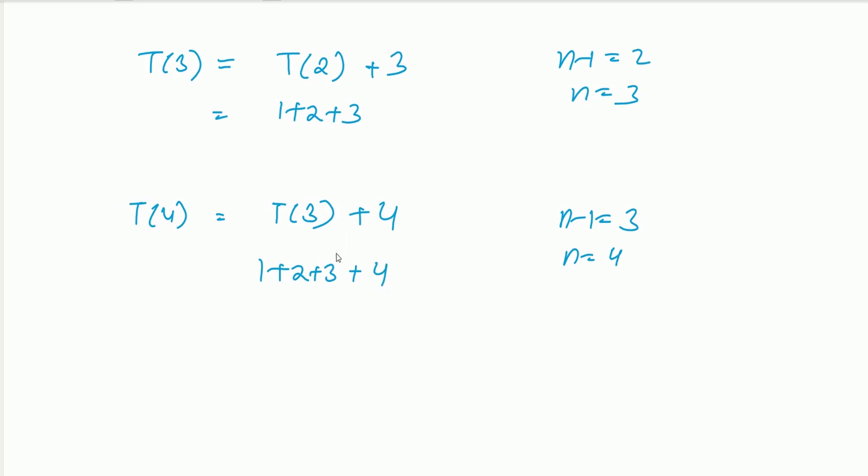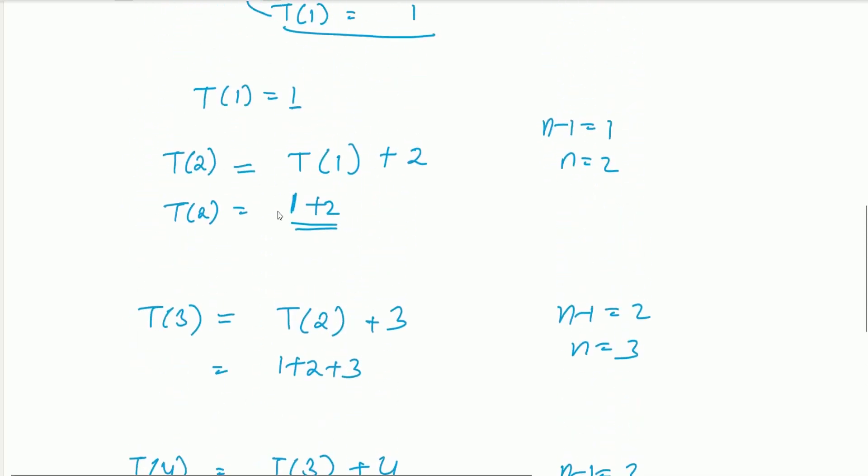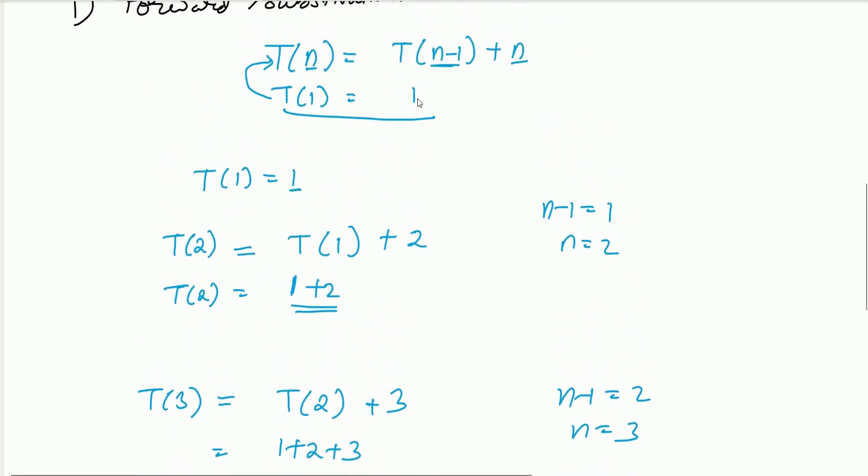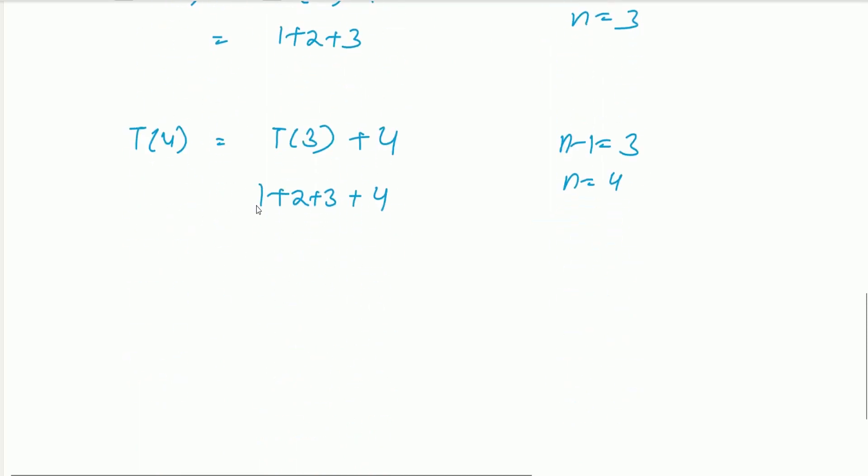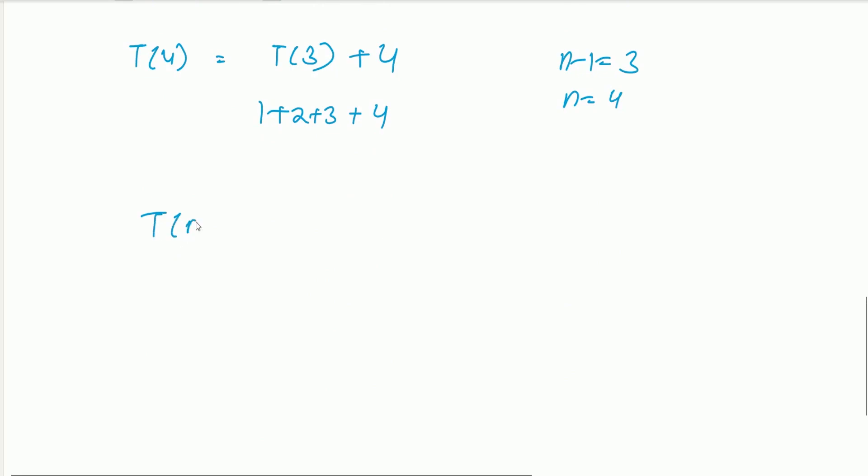Now this is the value of T(4). If we see the pattern: T(1) was only 1, T(2) was 1 plus 2, T(3) was 1 plus 2 plus 3, T(4) was 1 plus 2 plus 3 plus 4. So similarly, T(n) will become 1 plus 2 plus 3 plus 4 plus up to n. Now there is no term which is in form of T here on the right-hand side.